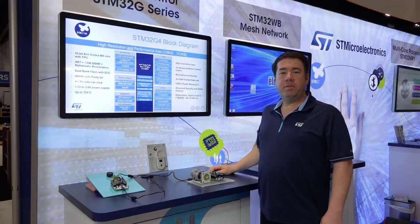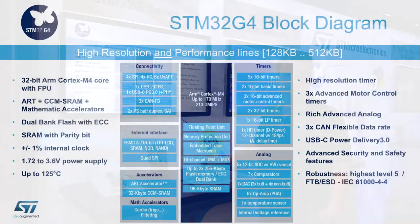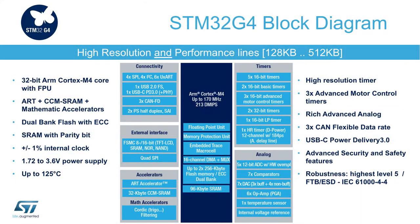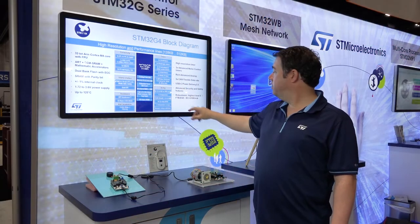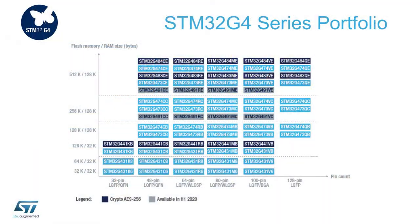The STM32G4 is a standard STM32 from a connectivity standpoint, with the addition of the CAN-FD controller and the rich analog peripherals that have been enhanced in this device. The product portfolio ranges from 32 pins to 128 pins, with flash densities from 32K to 512K.